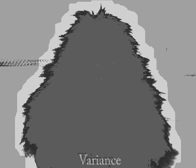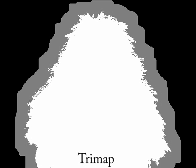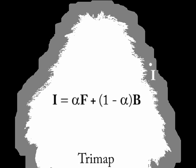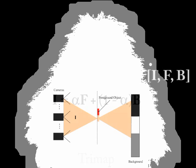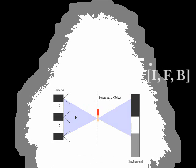We double-threshold the variance image to create a trimap which labels each pixel as foreground, background, or unknown. The point i in the unknown region is a linear combination of two random variables f and b, given the matting equation upgraded to work for random variables. We assume alpha is constant across all cameras, which means that the transparency of a point is view-independent. To solve for alpha, we need i, f, and b; however, we can only observe i.